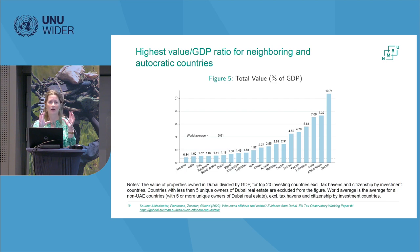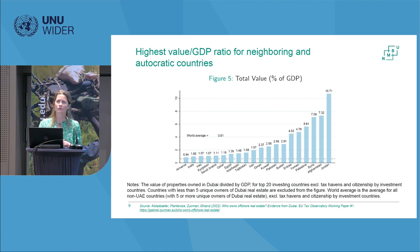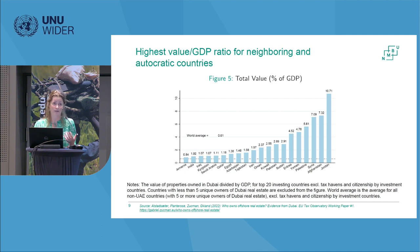If we take Dubai properties and divide by GDP to see how big investments are relative to how rich a country is, the top countries are Jordan, Afghanistan, Syria, Palestine, and Yemen. The highest concentration of ownership relative to national wealth is in autocratic and neighboring countries. It's important to note it's not just taxes that drive investment in tax havens - there's corruption, money laundering, and all kinds of illicit finance - but there are also very legitimate reasons for wanting to invest abroad. For example in Lebanon, when the banking system crashed and people lost all their money, people facing social unrest and inflation want to secure their savings.